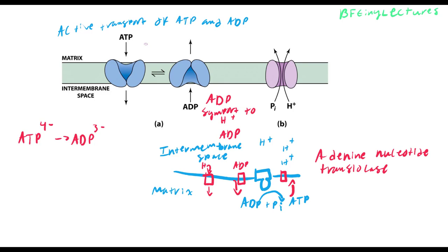To recap the transport: ADP is placed into the matrix, ATP is placed out of the matrix. There is a loss of one electron (one negative charge), so we need an electron transported into the matrix to compensate. That is why a hydrogen is placed into the matrix via the adenine nucleotide translocase protein. ADP is symport to hydrogen and antiport to ATP.